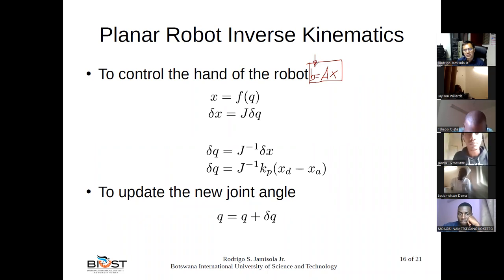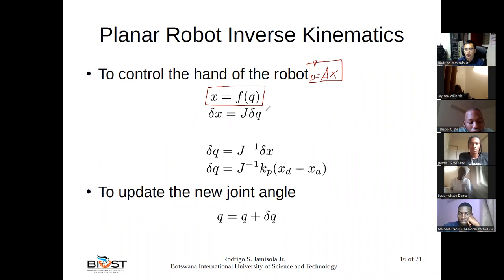Our forward kinematics is not expressed that way, so it is not linear. We don't want to solve the inverse kinematics directly from it because it will be very difficult. So first we linearize the system. We say the partial of x equals the Jacobian times the partial of q.